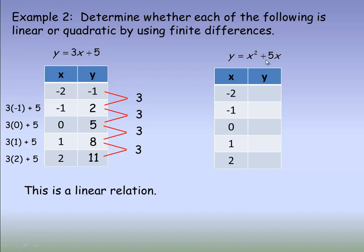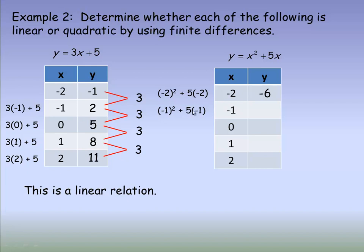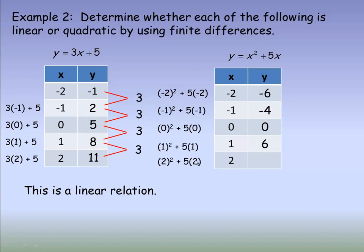Now let's do the second equation, again using x values from negative 2 to 2. We substitute negative 2: negative 2 squared plus 5 times negative 2 is 4 minus 10, which is negative 6. Then substitute negative 1: positive 1 minus 5 is negative 4. For x equals 0: 0 squared plus 5 times 0 is just 0. For x equals 1: 1 squared plus 5 gives 6. For x equals 2: 2 squared plus 5 times 2 is 4 plus 10, which is 14.